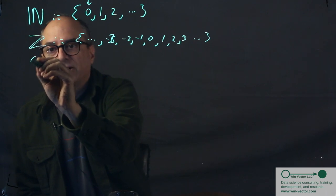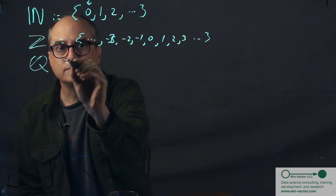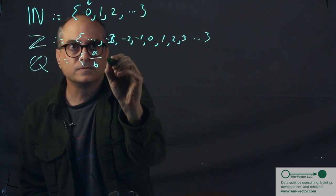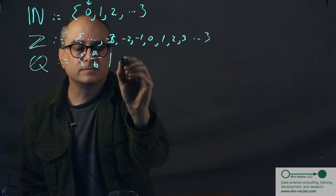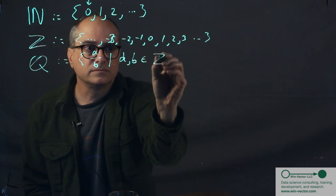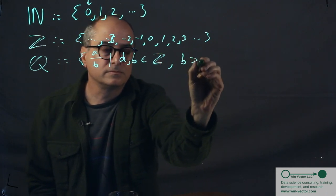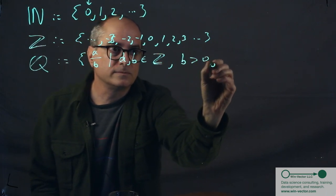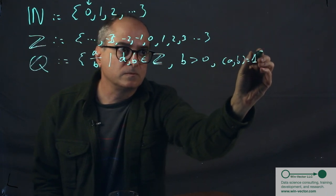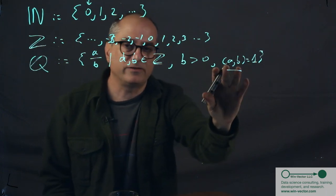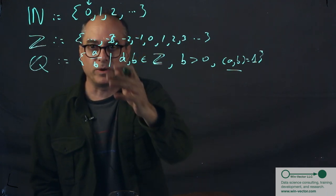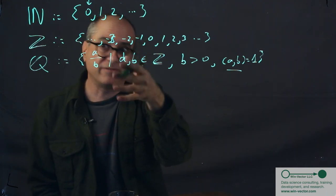the rational numbers. This notation means the greatest common divisor of A and B is one. So this is a reduced fraction. These are co-primes. So you would not write one-half as two-fourths.